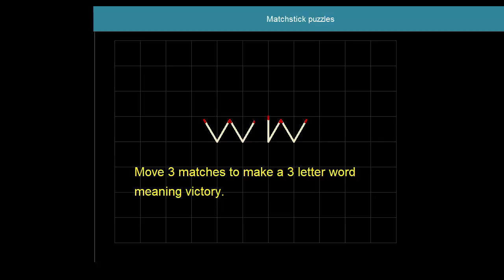What would be your first move? Let's have a look. First one. Second match. And the third one to make the letter N. So what do we have? W-I-N. To win. That certainly means a victory, doesn't it? Three matches to obtain that word.